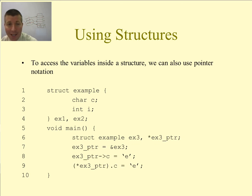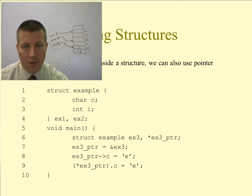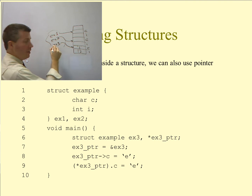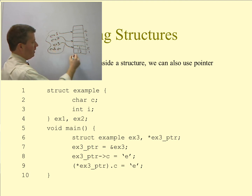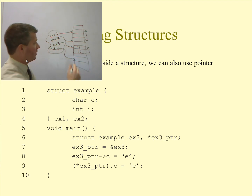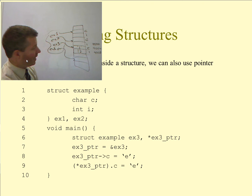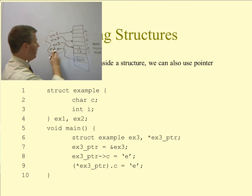To tie this together with what we've been discussing about pointers, we can actually have pointers to structures. It works exactly the same way as pointers to other types of variables. On line six I've created struct example ex3, and then here's a pointer — ex3_pointer. Inside my heap I'm going to have ex3_pointer pointing to some location in memory, and after line seven it will contain the address of ex3. Let's say the address of ex3 is 9004 — that's the address of c, the first variable inside ex3 — so I get 9004 inside ex3_pointer.